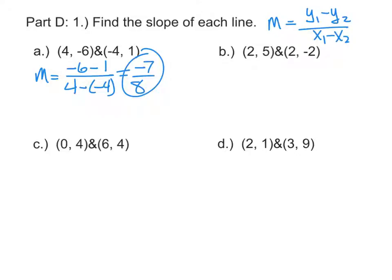With (2, 5) and (2, -2), the slope is going to be 5 minus negative 2 over 2 minus 2, which gives you 7 over 0. If you got 0 in the denominator, this slope is undefined.